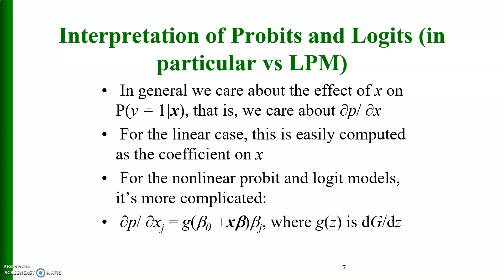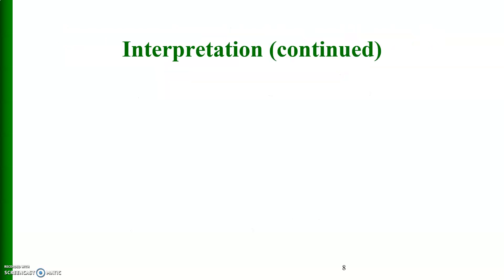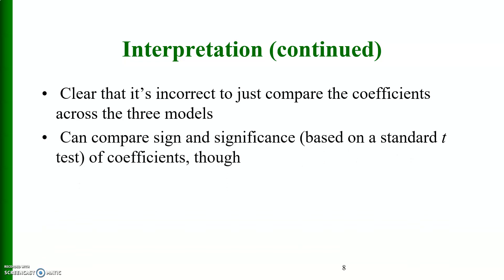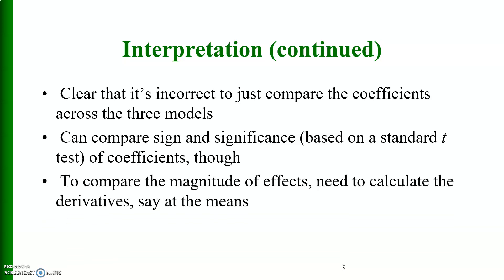Partial of p by partial of x_j is equal to g(beta naught plus x beta) times beta_j. How can we interpret that? It is clear that it is incorrect to just compare the coefficients across the 3 models. We can compare the signs and significance based on a standard t test of coefficients. And to compare the magnitude of effects, we need to calculate derivatives, say at the means. Stata can do that for us in the case of probit model.